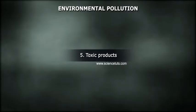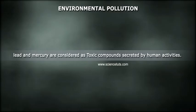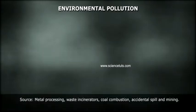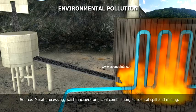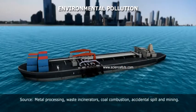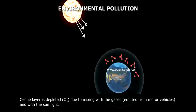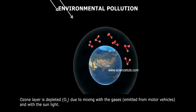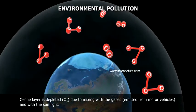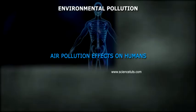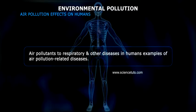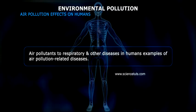5. Toxic Products — lead and mercury are considered toxic compounds secreted by human activities. Sources include metal processing, waste incinerators, coal combustion, accidental spills, and mining. 6. Photochemical Oxidants — the ozone layer (O3) is depleted due to mixing with gases emitted from motor vehicles and sunlight. Air pollutants contribute to respiratory and other diseases in humans.